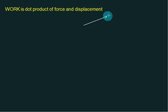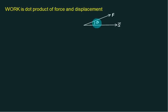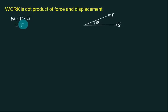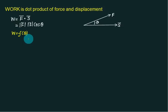If we have a force vector and a displacement vector, and the angle between them is theta, then work is defined as the dot product of force and displacement. The dot product is given by the magnitude of F times the magnitude of s times cosθ. The value of work is a strong function of theta: if theta is 0, cos0 = 1; if theta is 90, cosθ = 0; and for 180°, cosθ = -1.